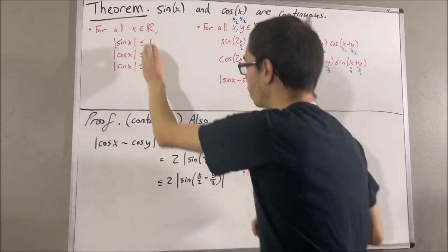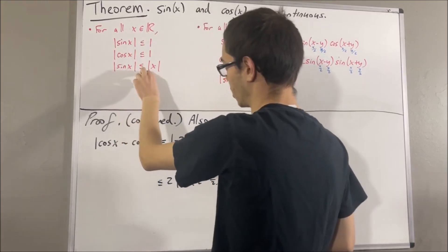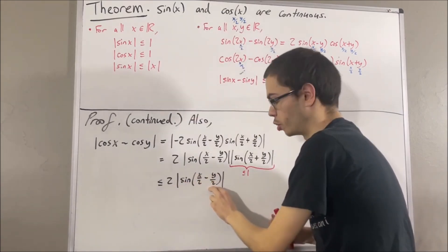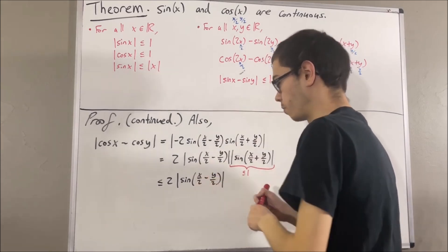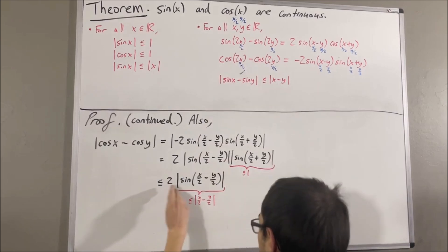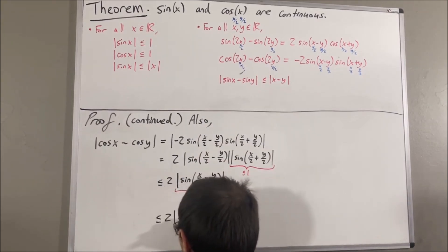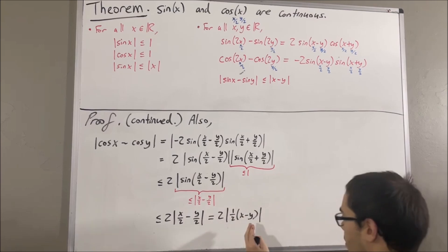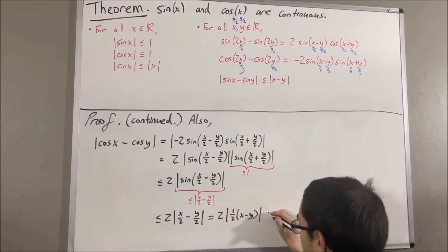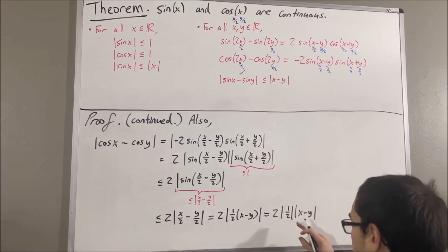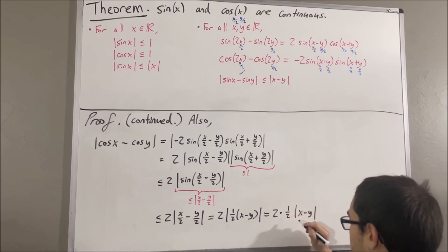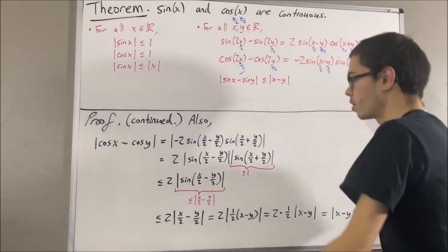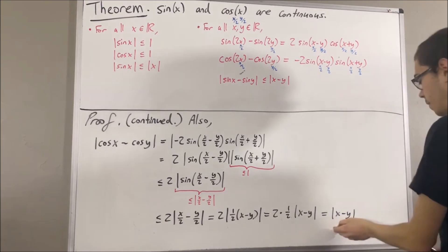Remember, we know for all real numbers x, the absolute value of sine x is less than or equal to the absolute value of x. So in particular, the absolute value of sine of (x over 2 minus y over 2) must be less than or equal to the absolute value of (x over 2 minus y over 2). Because of that, this entire thing must be less than or equal to 2 times the absolute value of (x over 2 minus y over 2). Factoring out 1 half and using the multiplication property of absolute values, the absolute value of 1 half is just 1 half, so this is just the absolute value of x minus y. We have shown the absolute value of cosine x minus cosine y is less than or equal to the absolute value of x minus y.